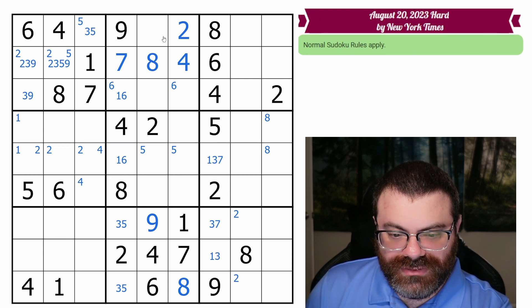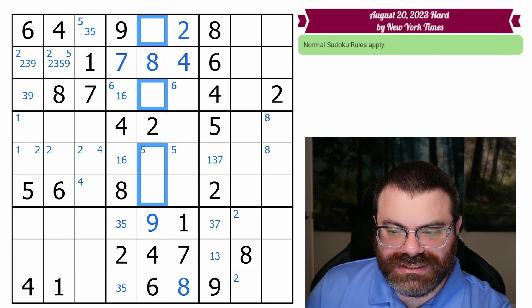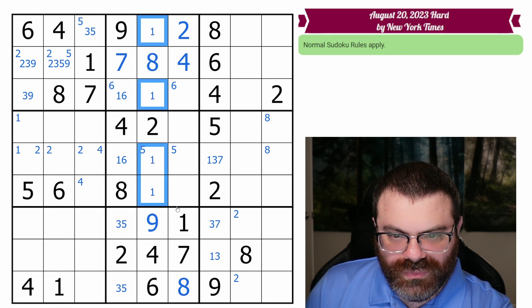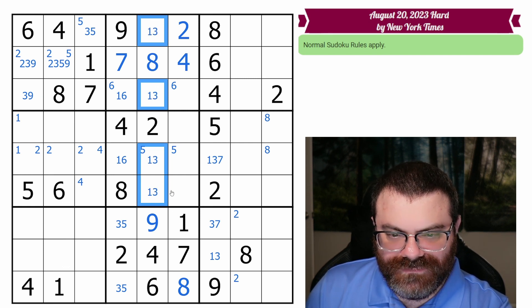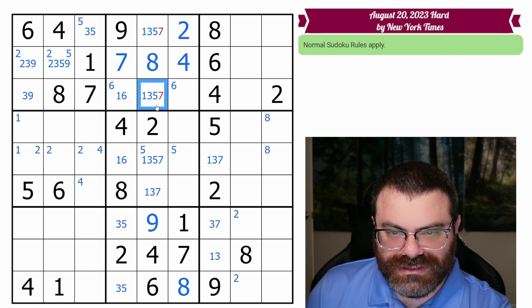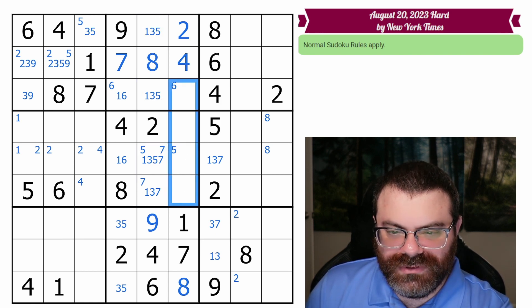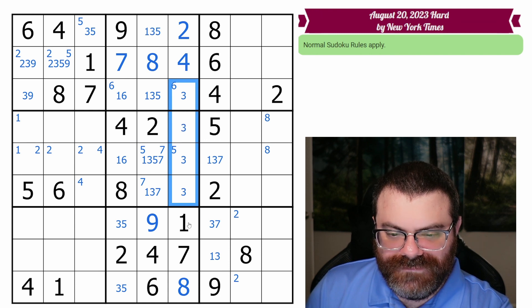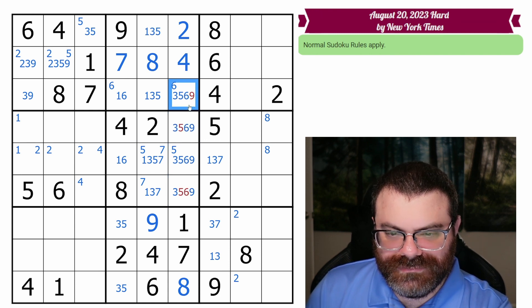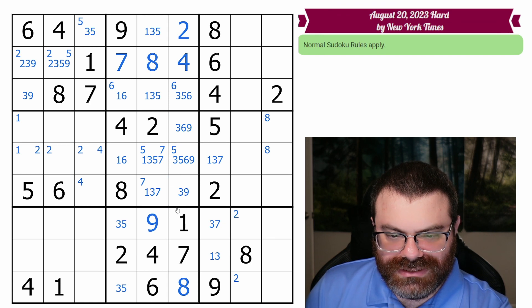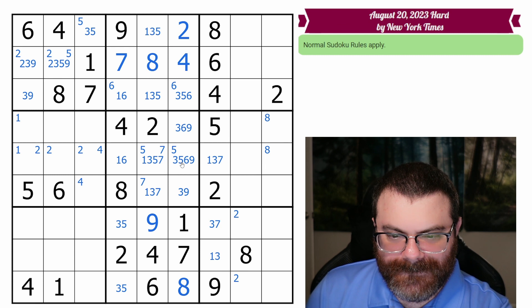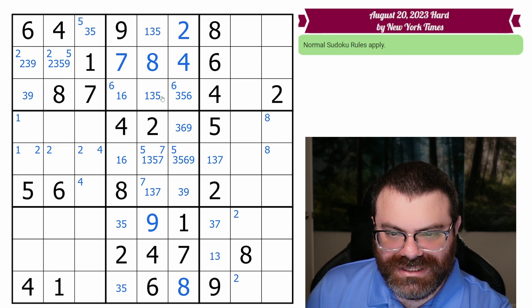So the three five pair helped because it removed three from some places in this box. So can we do more now? I don't think so. Let's just fill the rest of these candidates though, because there's four here and there's four here. So we need a one, three, five and seven here. These can't be seven. So seven goes here. We should remember that. And then these four are three, five, six, and nine.